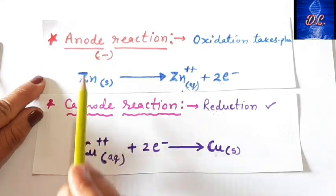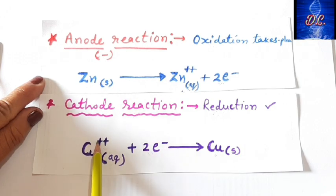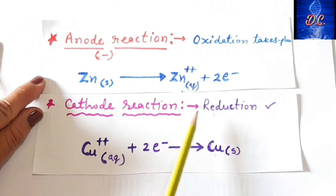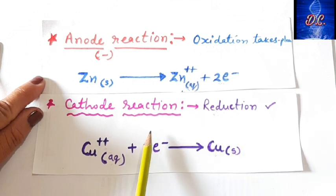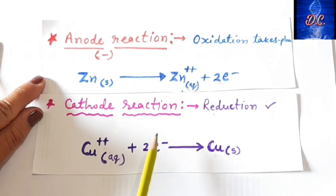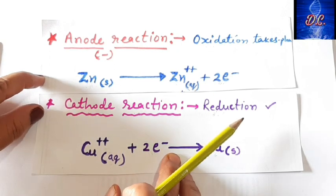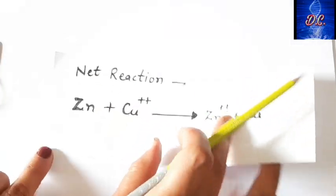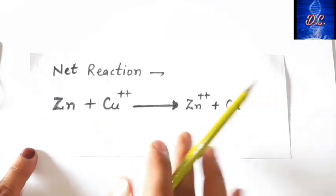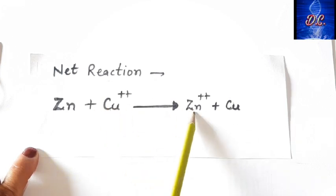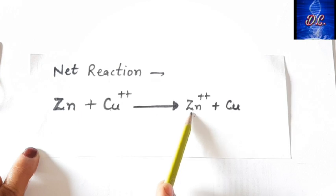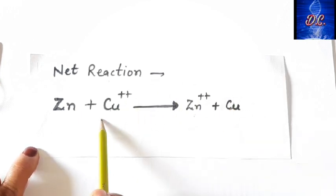When you add the anode and cathode reactions together — the oxidation at the anode and the reduction at the cathode — you get the net reaction taking place in the galvanic cell. The net reaction is: Zn + Cu²⁺ → Zn²⁺ + Cu. Here zinc is being oxidized and copper is being reduced. This is the net reaction of the galvanic cell.